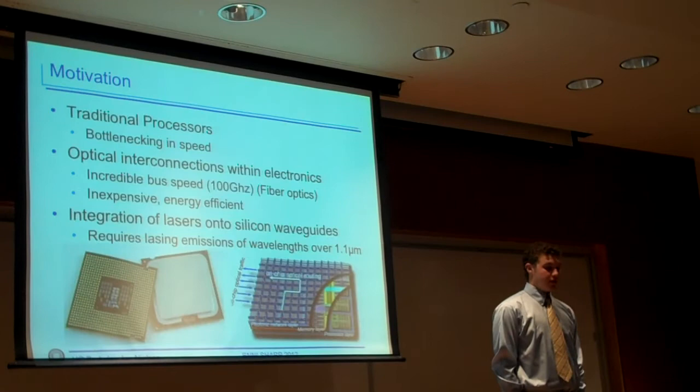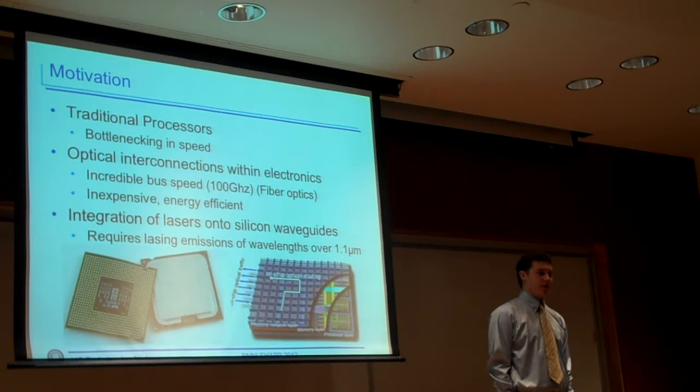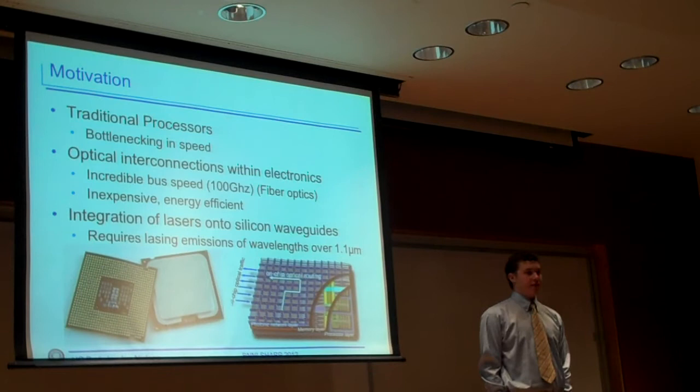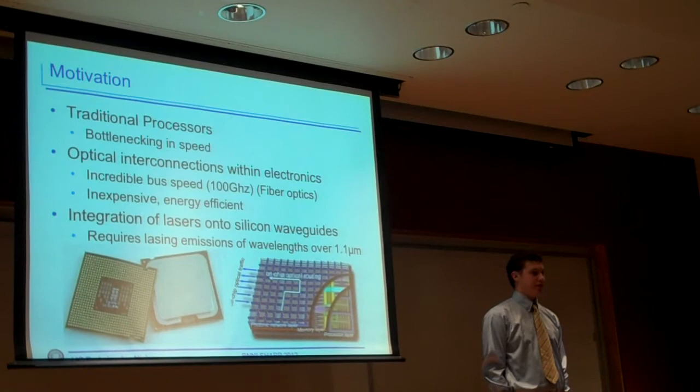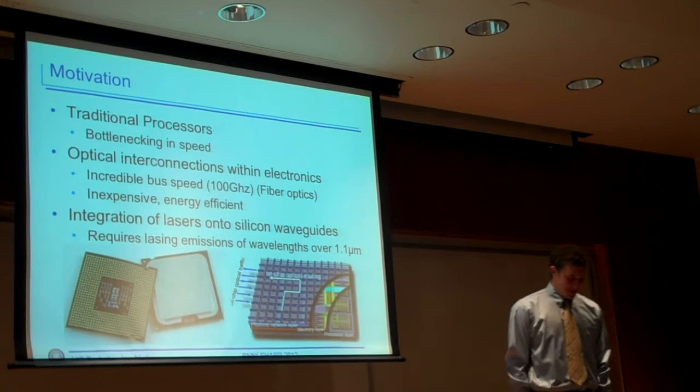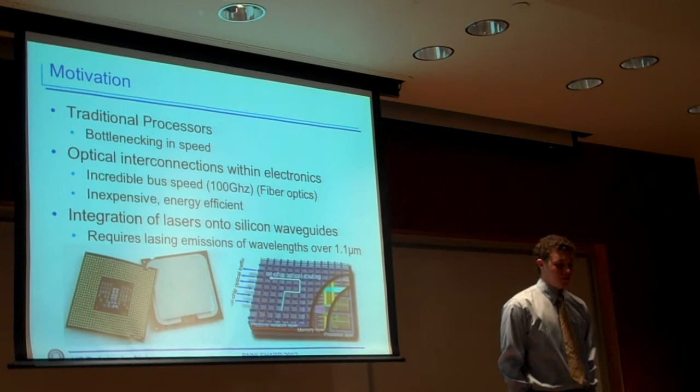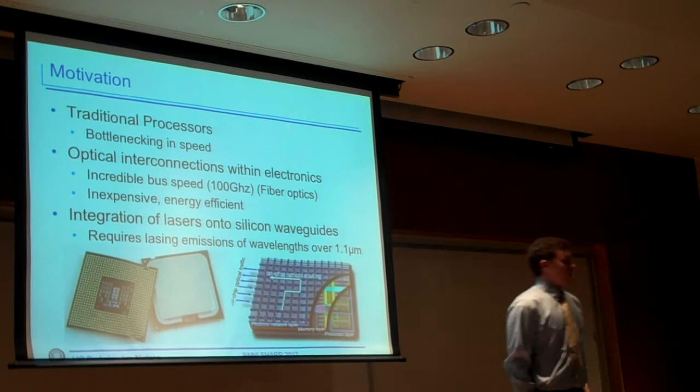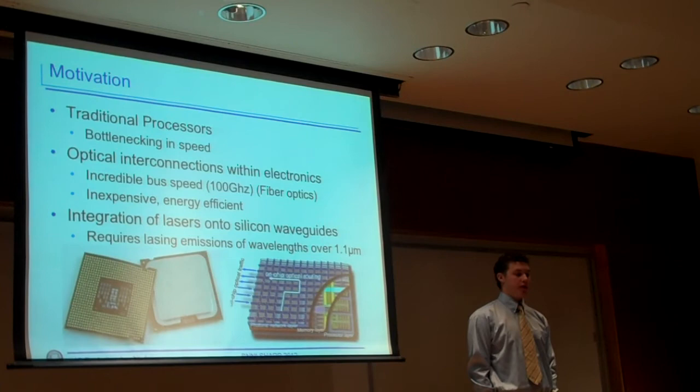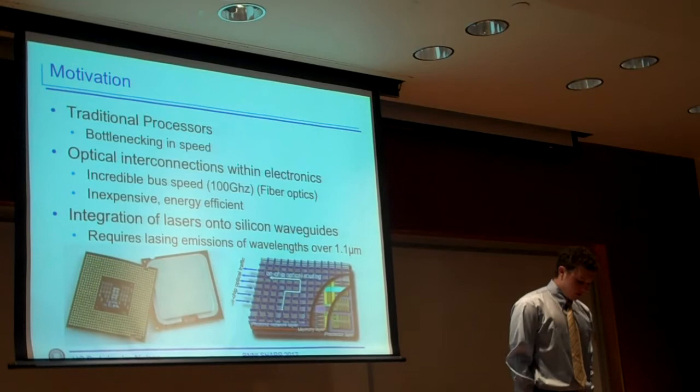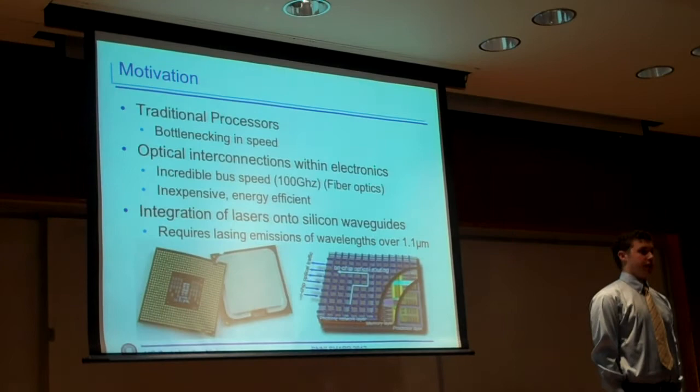In traditional processors, the processing speed has been increasing recently. How fast is your processor? The speeds nowadays are bottlenecking at around 3.8 gigahertz, somewhere above that general area. We have been trying to find alternatives to make processors even faster nowadays, and one of those alternatives is optical interconnections with electronics. The reason we want to use optical interconnections is that they are extremely fast, they are extremely energy efficient, and they are rather inexpensive.